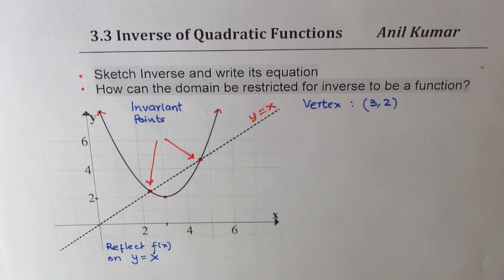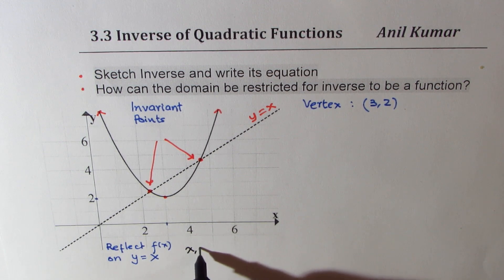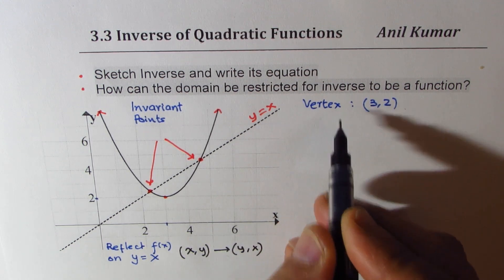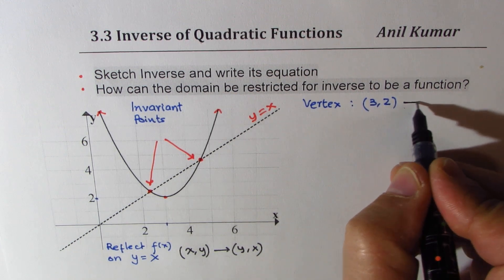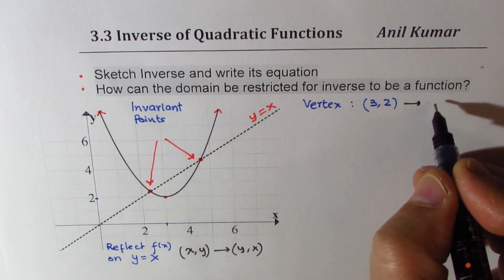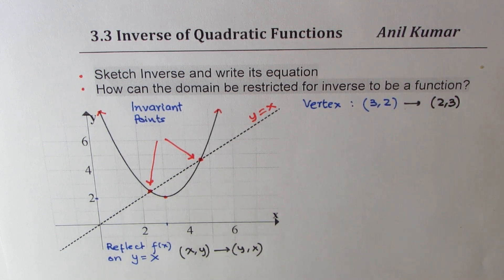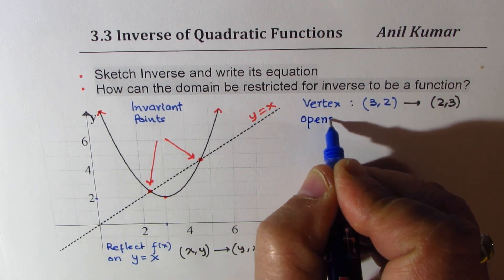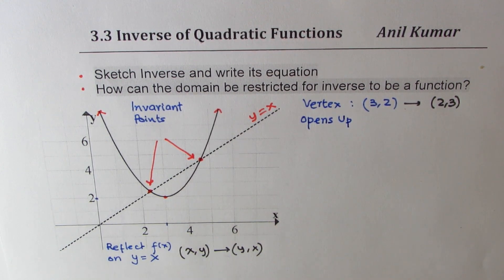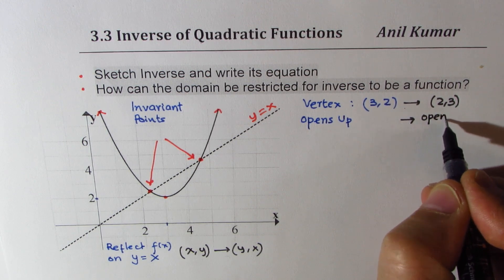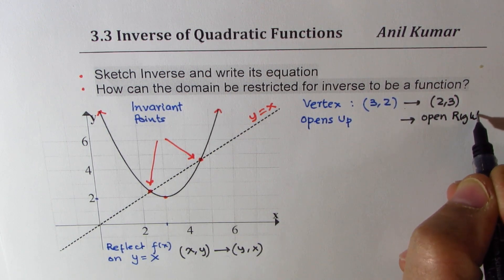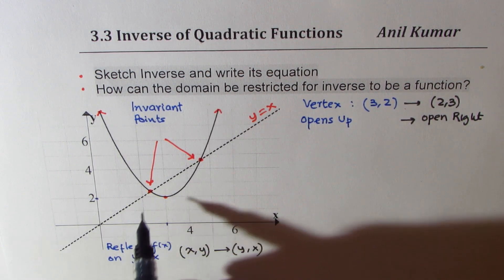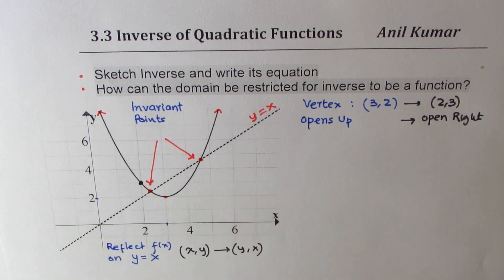Whenever this reflection is done, the x, y points swap — they become y, x. So the vertex on f(x) at (3, 2) will now change to the vertex (2, 3) on the inverse. This parabola opens up, so when you take the inverse, it will open to the right. The point at (3, 2) will now be at (2, 3) on the inverse function.